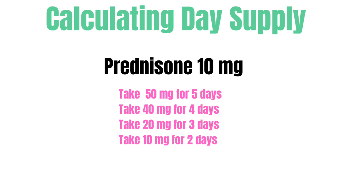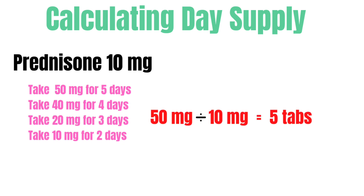Now let's talk about calculating day supplies. I chose prednisone 10 mg as the example — if you work in a pharmacy, you know these taper prescriptions can be a bit of a pain to calculate. When the prescription doesn't come in a pre-packaged taper packet, you have to calculate it yourself. Say the prescription reads: prednisone 10 mg — take 50 mg for 5 days, 40 mg for 4 days, 20 mg for 3 days, and 10 mg for 2 days.